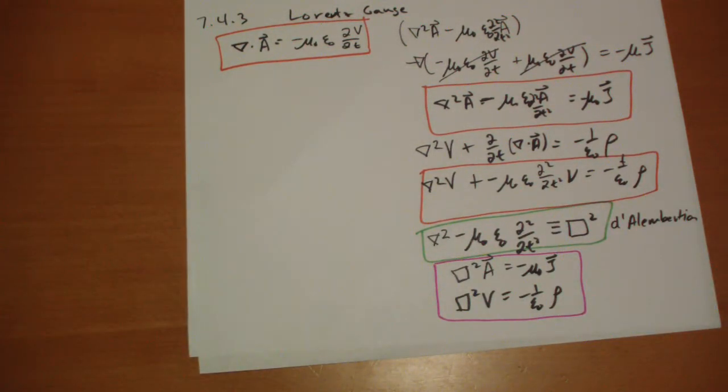So given the current, we can calculate A. Given the rho, we can calculate V. And then from A and V, we can calculate everything else that we ever need.